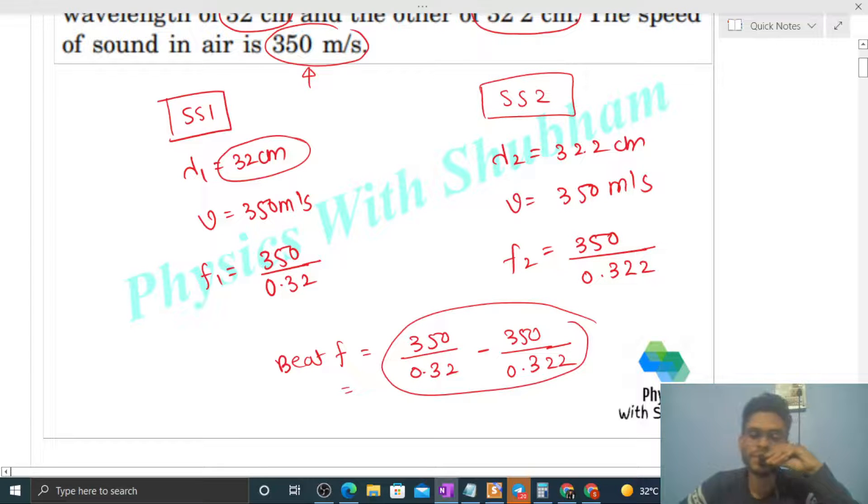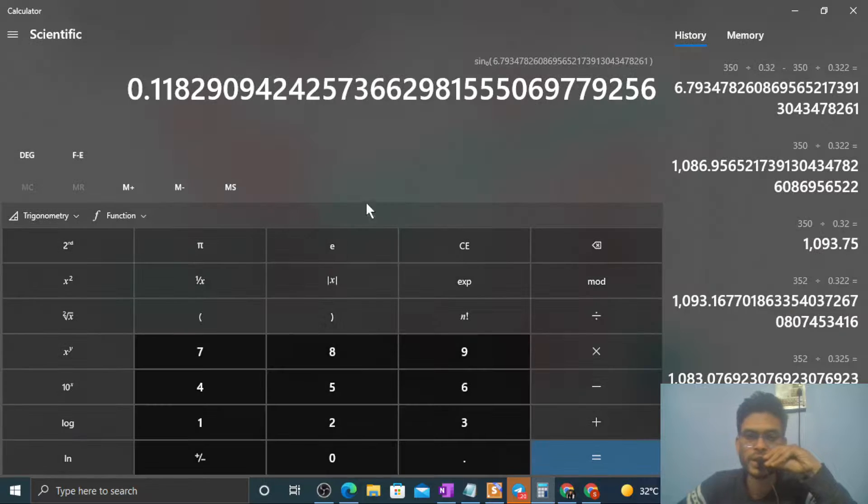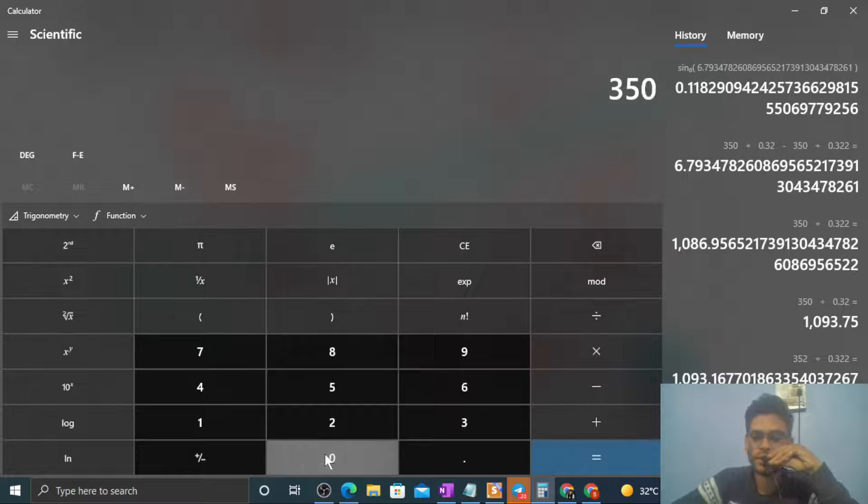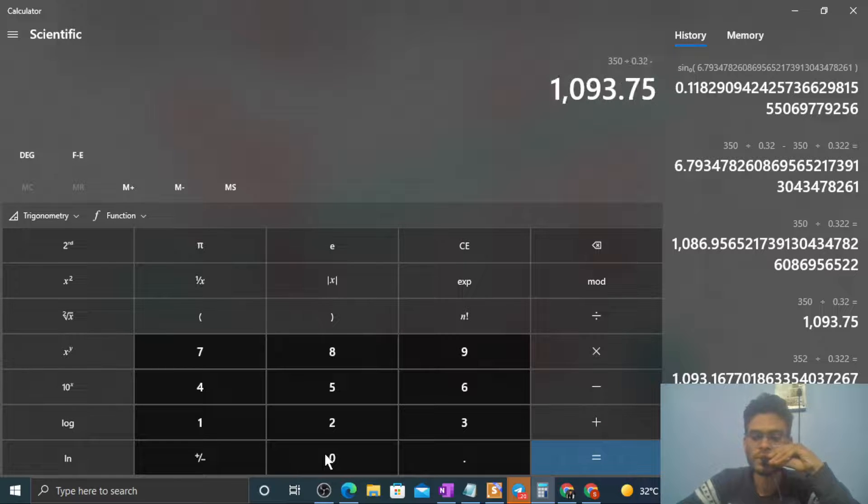This is your beat frequency. So let me calculate it - actually I have already calculated, but let me do it once more. 350 divided by 0.32 minus 350 divided by 0.322.